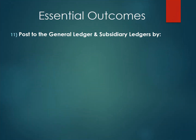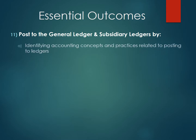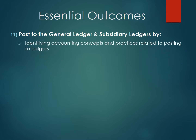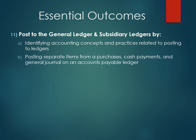Essential Outcomes for Chapter 11. You are going to post to the general ledger and subsidiary ledgers by: A. Identifying accounting concepts and practices related to posting to ledgers. B. Posting separate items from a purchases, cash payments, and general journal on an accounts payable ledger.